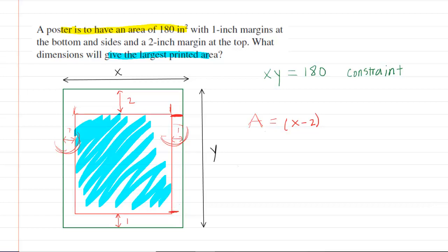We can again hopefully see that that dimension would be not Y, but Y minus 3. We have to take the entire length of the outer poster of Y and then we have to subtract those 3 inches from it. So we would have Y minus 3.